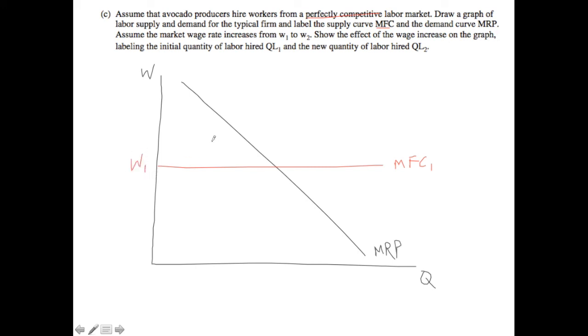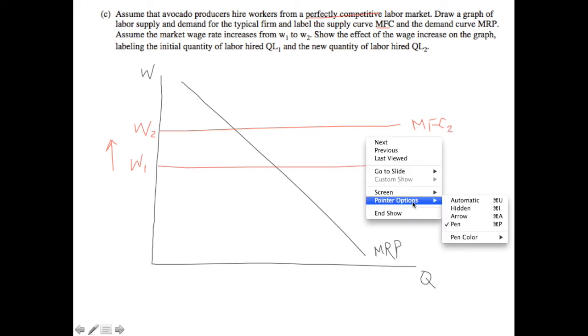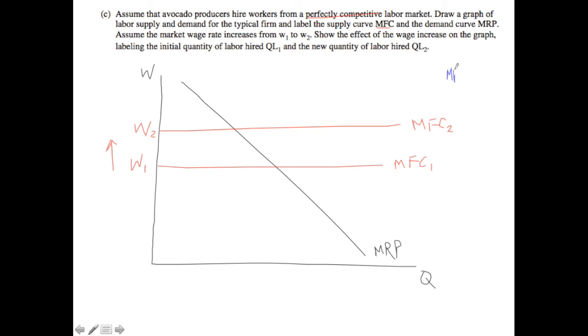And so this is going to be equal to the wage 1. And then what we also know is that the market wage is now increased, so we need to go up. And so we have a new wage 2, which is represented by the marginal factor cost 2. And so if we look at the equilibrium points of these, we need to look at where the marginal revenue product is equal to the marginal factor cost. And we see that that happens here.